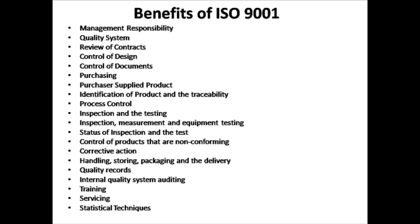What are the benefits of ISO 9001? Management becomes responsible. A quality system is put into place. Contracts are reviewed properly. Control of design is done. Control of documents is also done. Purchasing is done properly. Products supplied by the purchaser are verified at the purchasing stage. Identification of product and its traceability is ensured. Process control is maintained. Inspection and testing are carried out. Inspection, measurement, and equipment testing are conducted. Status of inspection and test is tracked. Control of non-conforming products is enforced. Corrective action for non-conforming products is taken. Handling, storing, packaging, and delivery of products are managed. Quality records are kept. Internal quality system auditing is performed. Training is provided for service personnel. Servicing and statistical techniques are applied.